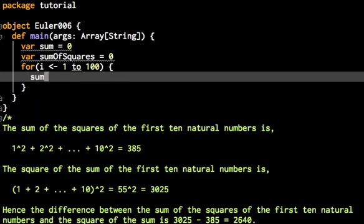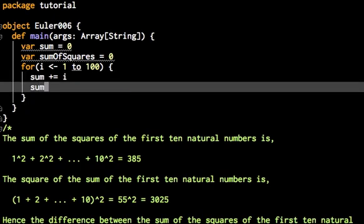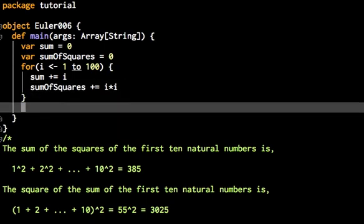Now, in every iteration of the loop, we increase the sum by i, and we increase the sum of squares by i squared, which is i times i. Like most other programming languages, with the exception of perhaps Haskell, Scala unfortunately doesn't provide any exponential operator. So you've got to build the square like this.